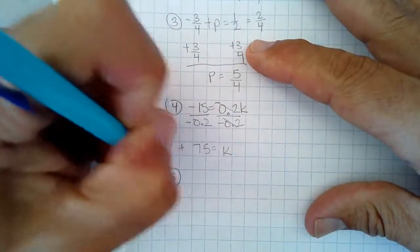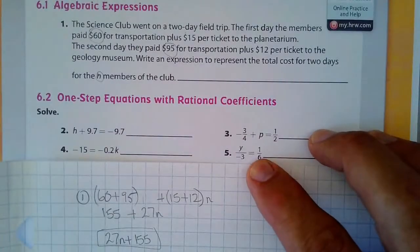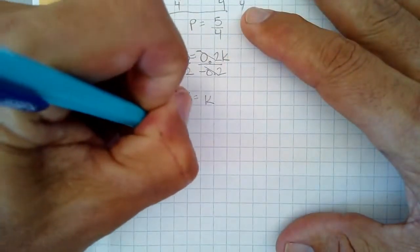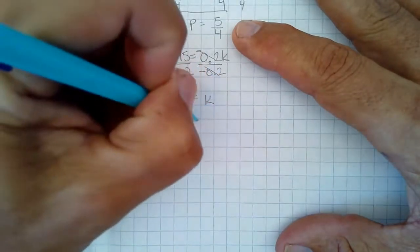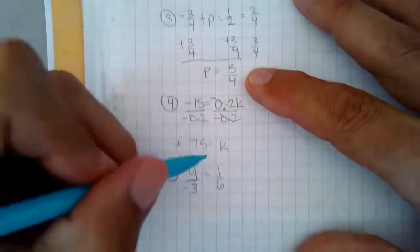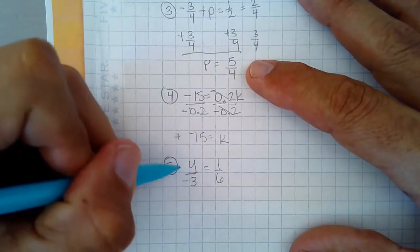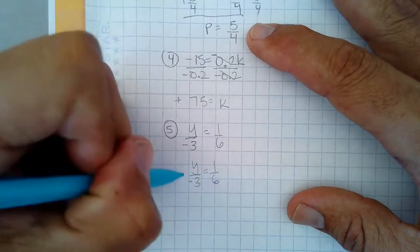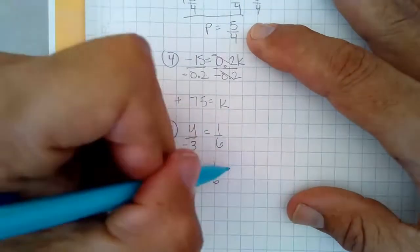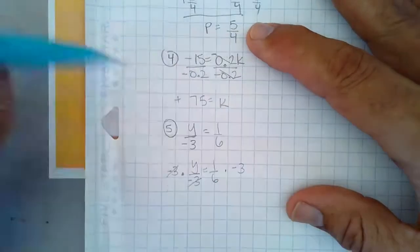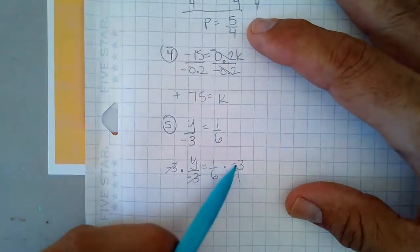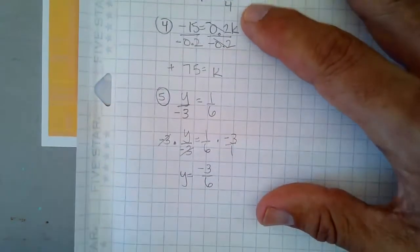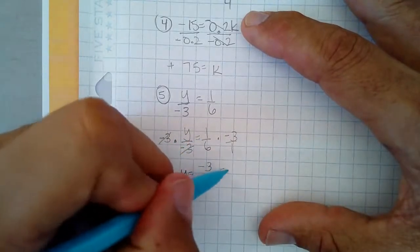Number five is y over negative 0.3 equals one-sixth. To solve for y, since that's being divided by negative 3, I have to multiply both sides by negative 3. Let me rewrite this here so I have a little bit more space. I multiply this side by negative 3. That gets these to cancel. I multiply this side by negative 3. I could think of this as negative 3 over 1. And now I multiply 1 times negative 3 is negative 3, and 6 times 1 is 6. And y equals negative three-sixths, which does simplify to negative one-half.